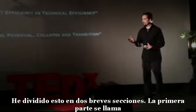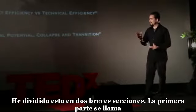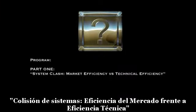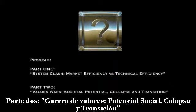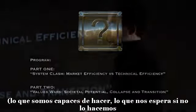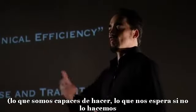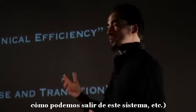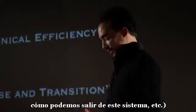I've divided this into two brief sections. The first part is called 'System Clash: Market Efficiency versus Technical Efficiency.' Part two is 'Value Wars: Societal Potential Collapse and Transition' — what we're capable of doing, what's in store for us if we don't, and how we can get out of this system.